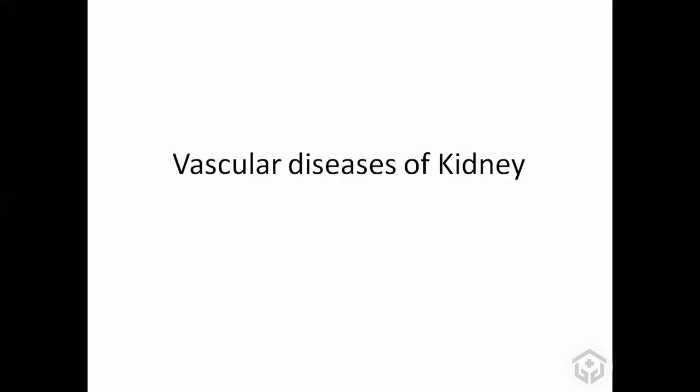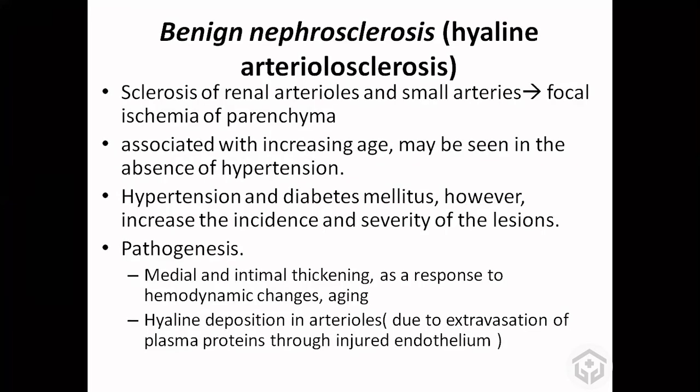The vascular diseases of the kidney — nephrosclerosis — is basically arteriosclerosis. There are two types of nephrosclerosis: benign nephrosclerosis, also known as hyaline arteriosclerosis, and malignant nephrosclerosis, also known as fibrinoid necrosis.